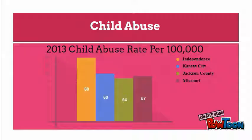Child abuse is first. The numbers in the graph were found in the Missouri Information for Community Assessment Database. Child abuse is defined as physical, emotional, or sexual abuse or neglect of a child. While over the past 10 years Independence and the state have seen a drop in child abuse, you can see Independence has a 27% higher rate of abuse-related injuries in children under 15 than Missouri overall.